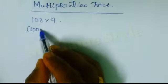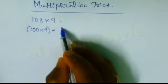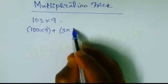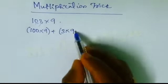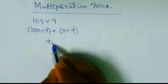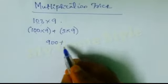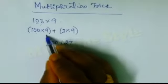First, this one I am doing 100 into 9 plus 3 into 9. 100 into 9 I am doing, 3 into 9 I am doing differently. Okay, 100 into 9 is 900 plus 3 into 9 is 27, so this is this one and this is this one.